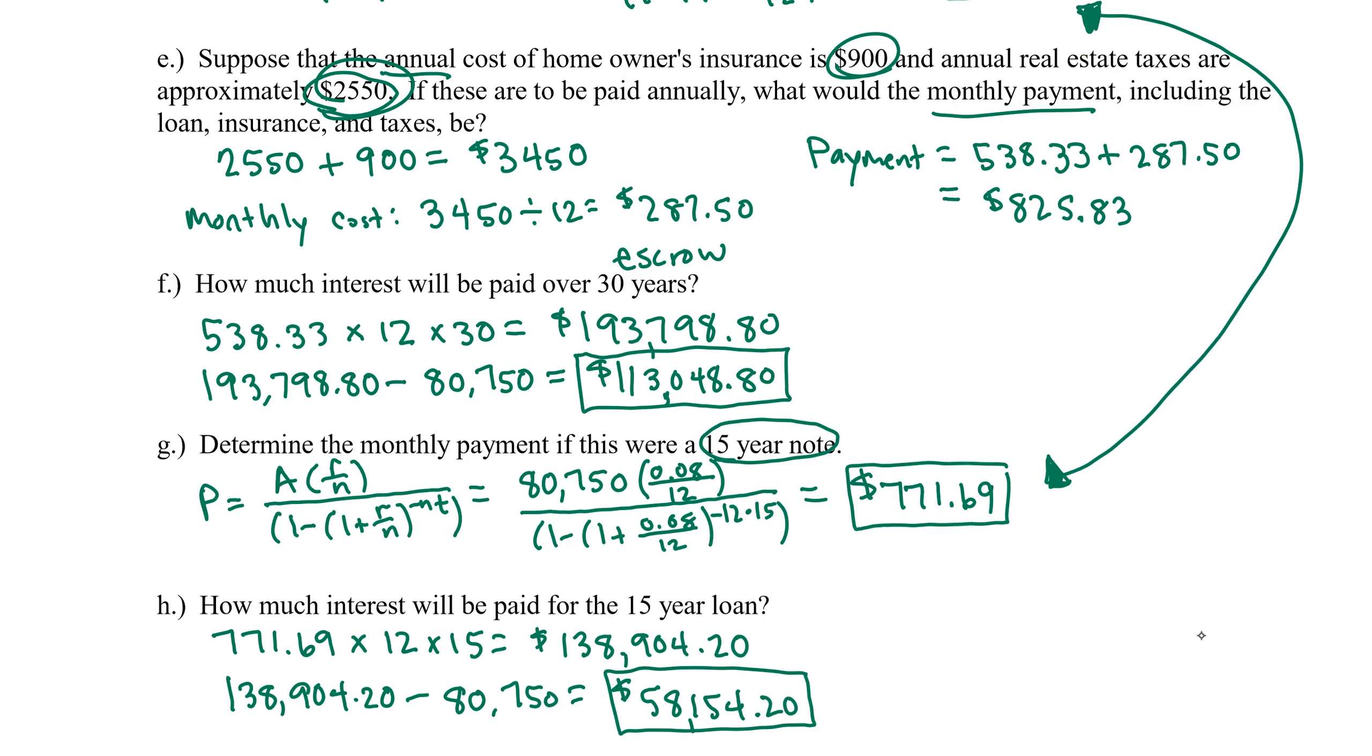And we end up with $58,154.20. So even though our monthly payment was higher, look at the difference in the amount of interest that we pay. There is a vast difference to the cost of a 30-year note versus the cost of a 15-year note.